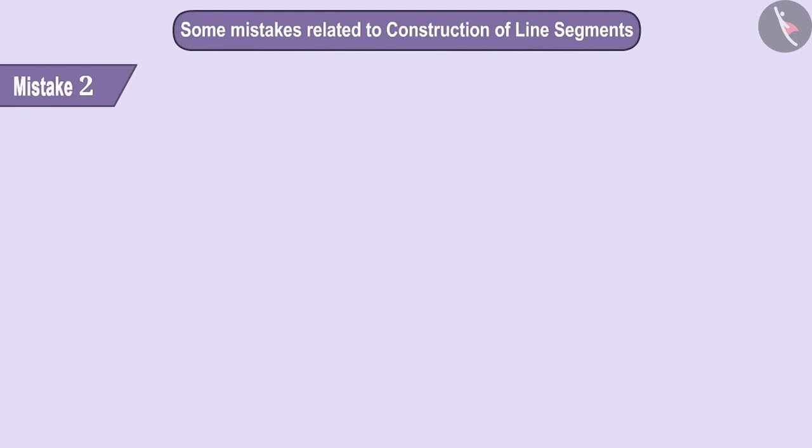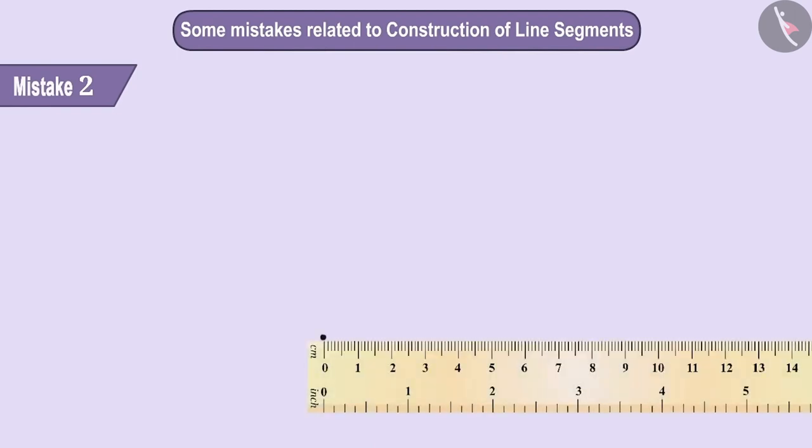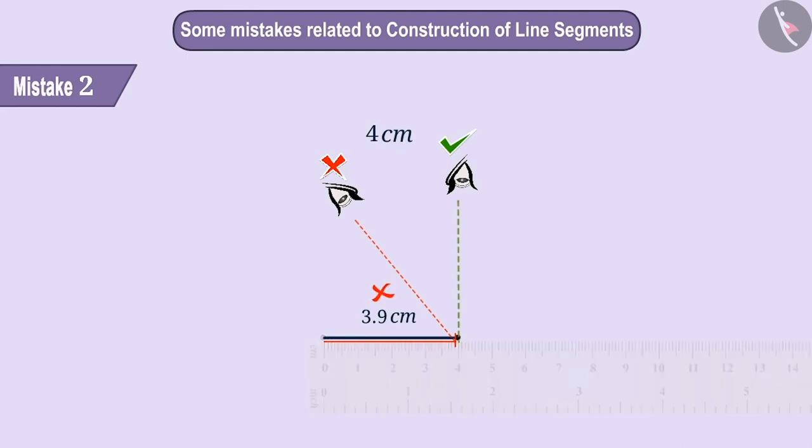Mistake 2. Line segments can be drawn using only a ruler. But while drawing the line segment, children do not carefully observe the mark while drawing the line segment. Due to this, they do make the line segment but it is not of the given measurement and thus it is wrong.